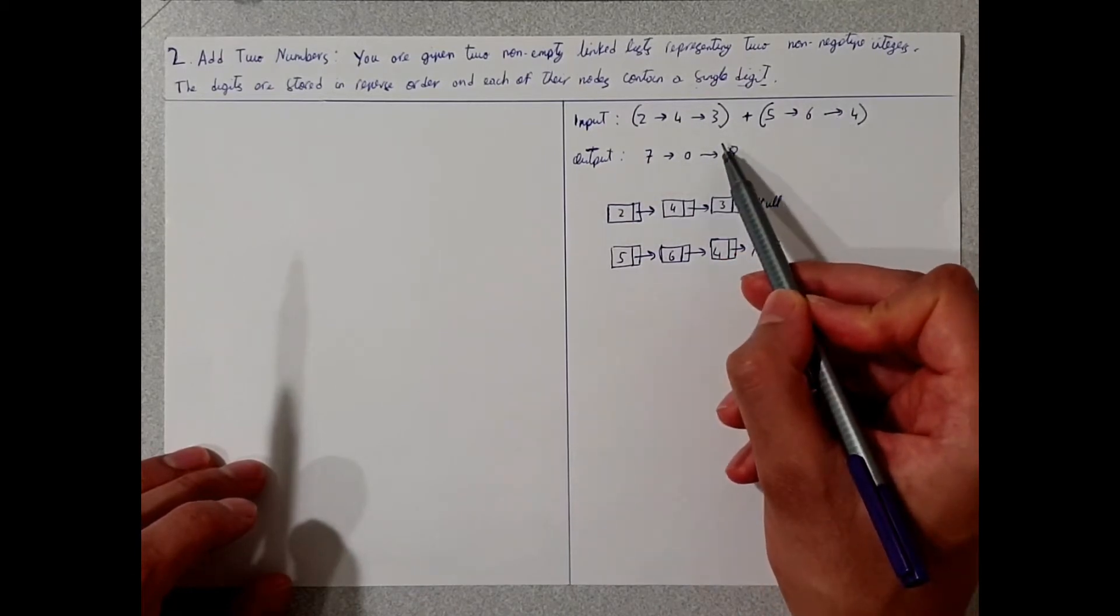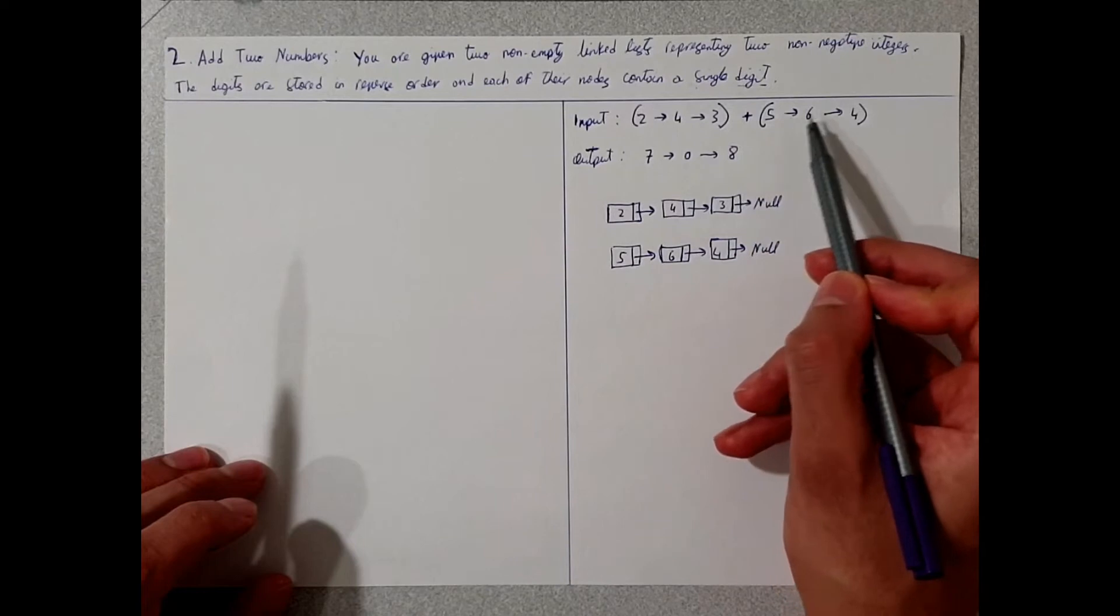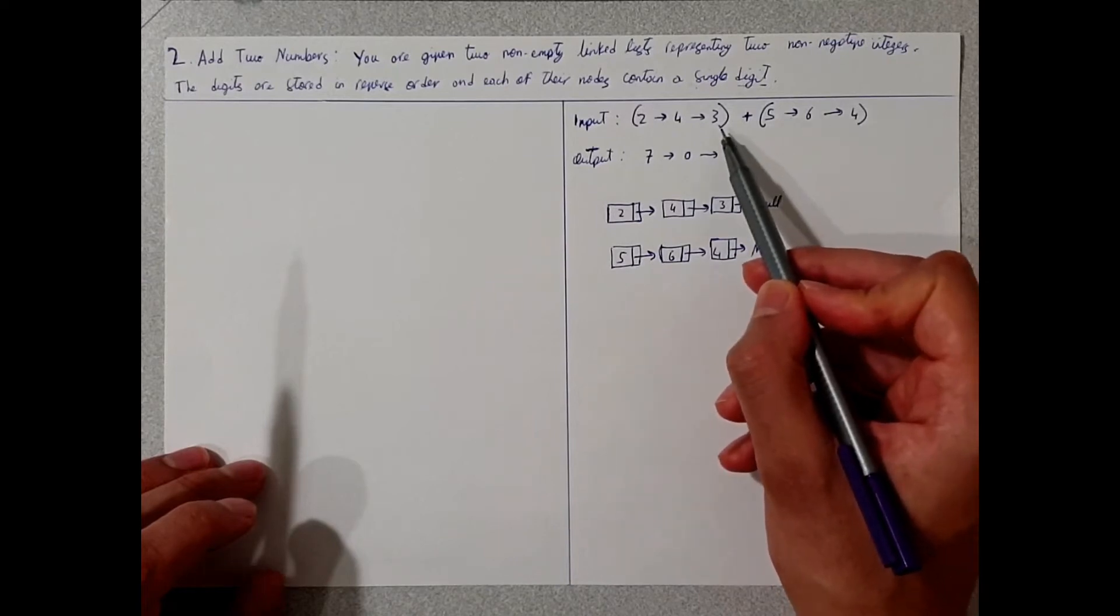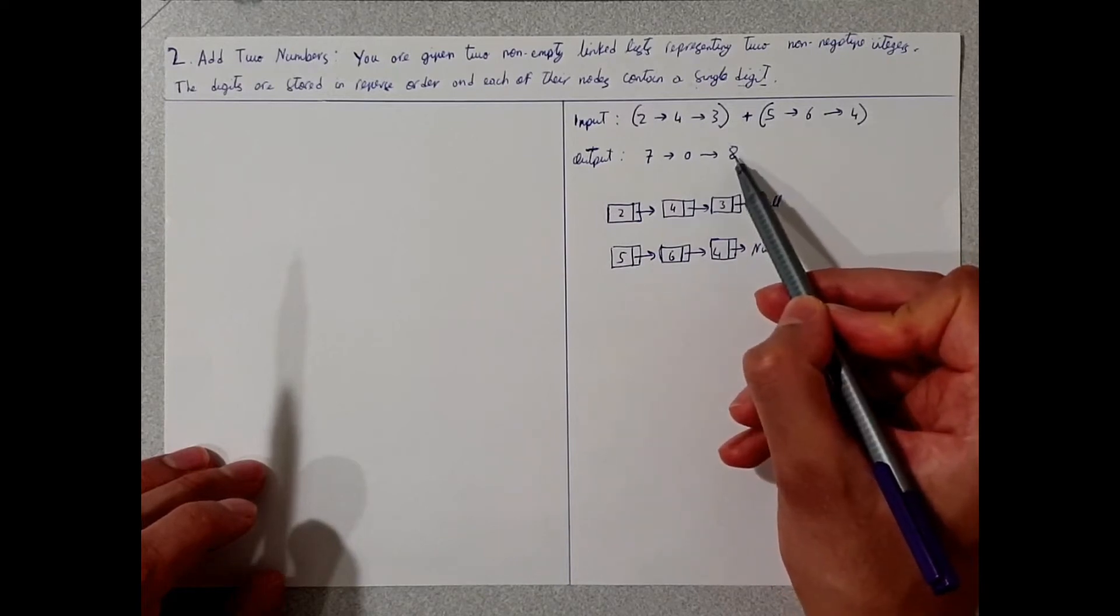becomes a carry over to the next one. So we have a one carry over here. 4 plus 3 is 7, with the one carry over it's 8.